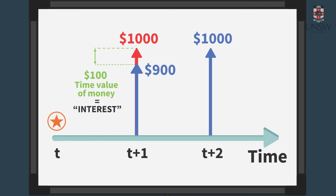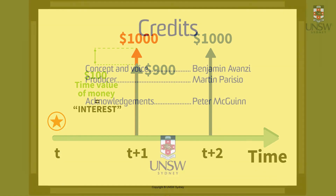The mathematical model for this is what we call interest. Assumptions about interest will help determine how to calculate equivalent cash flows at different dates, or equivalently, how to rank cash flows occurring at different dates.